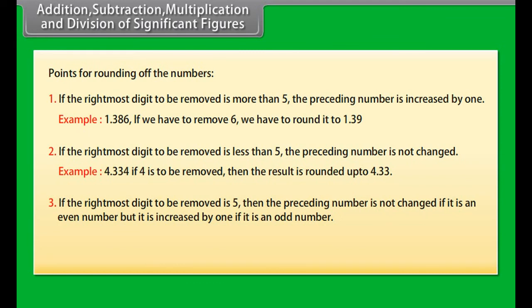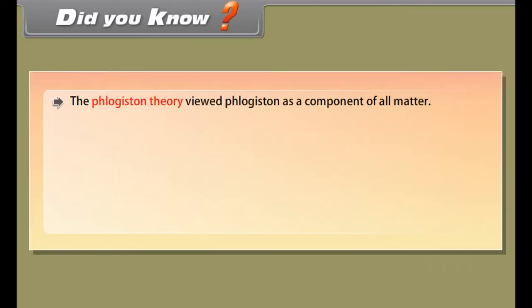Zeros proceeding to first non-zero digit are not significant. Such zero indicates the position of decimal point. Thus, 0.03 has one significant figure and 0.0052 has two significant figures.